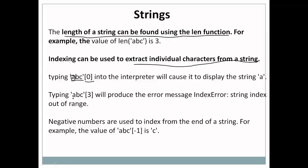If I type 'abc'[3], I am trying to extract the third character from the string. But looking at the string, there is no third character — 0th is 'a', first is 'b', second is 'c'. There is no character at location 3. So that produces an index error message.